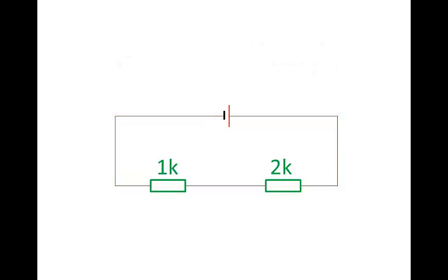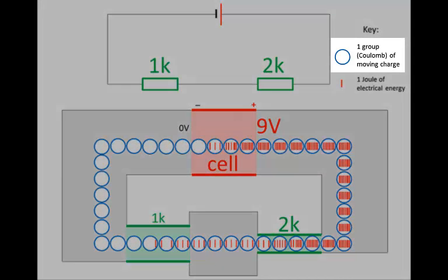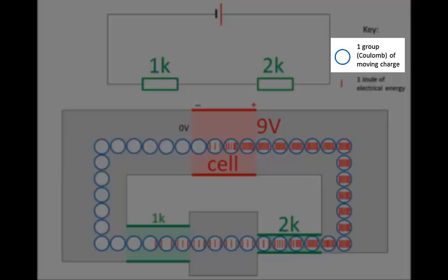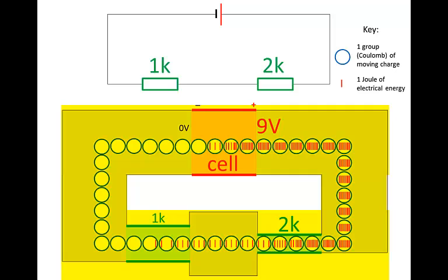We can liken this series circuit to this picture shown here. Each of the blue circles stands for a group — a coulomb — of moving charge. Wires throughout the circuit contain charge; they contain positive and negative charge. In the case of electricity, it's the negative charge, the electrons, which can be moved. This moving charge forms electric current. We can imagine these groups of charge, these blue circles, moving clockwise around in the circuit.